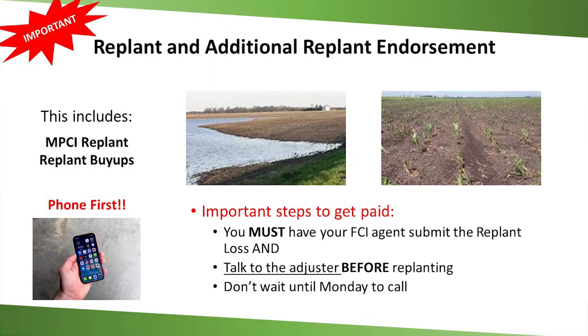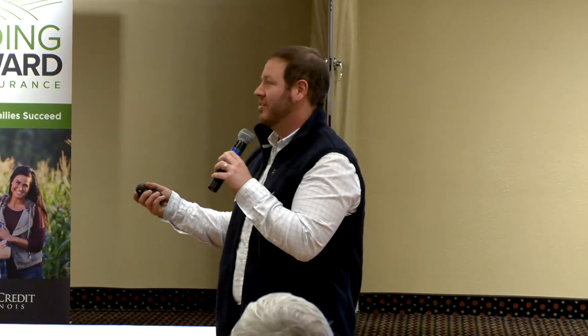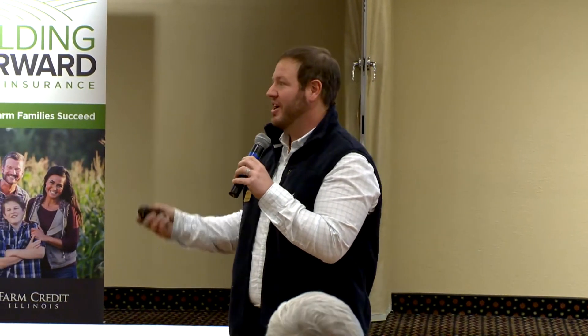This leads into one of our biggest roadblocks as agents. I know you guys are busy in the spring — you think you call us and you've got to have an adjuster come out and hold you up from planting. But with the dollars involved, it's so important: this applies to your multi-peril and your replant buy-ups. We need to be called first, submit a claim, and you need to be contacted by an adjuster before you can go and replant those acres. Doesn't matter if it's Friday night or weekend — we have cell phones. Call or text. After the fact, there's not much we can do.